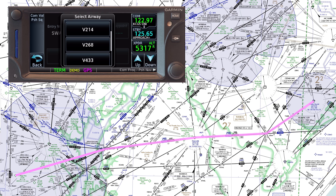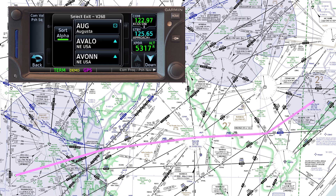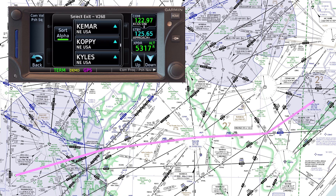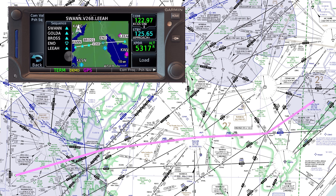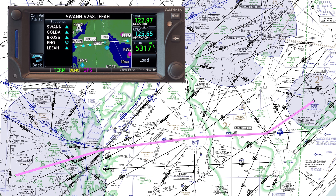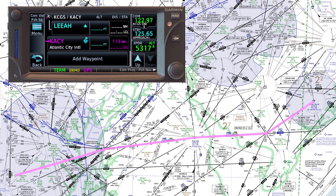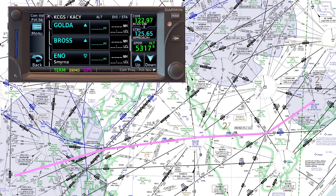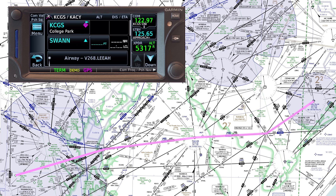We'll scroll down by tapping down until we find Victor 268. Now we need to select the exit point — these are all the points along Victor 268. We scroll until we find Leah and tap that. We can preview the route to make sure it looks okay; it lists the sequence of waypoints we'll be flying over. In older GPS units like the 430 or 530, we wouldn't have been able to enter the airway like this and we'd have to enter each fix individually. So now we'll hit load, and scrolling we can see the whole airway segment has been added to our flight plan with each fix along the sequence.